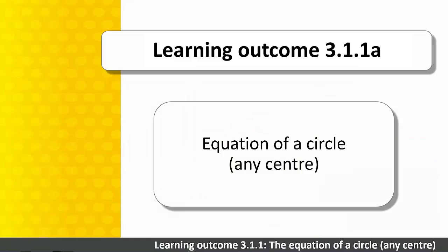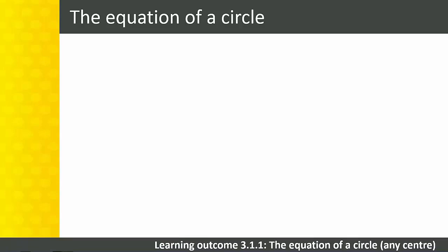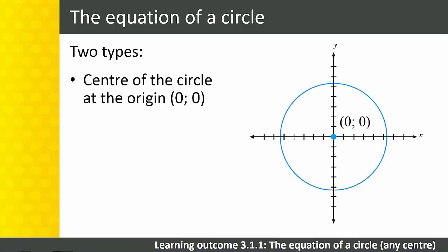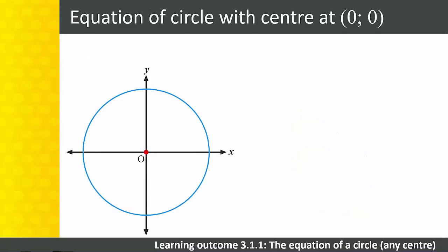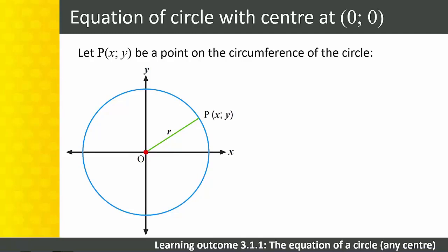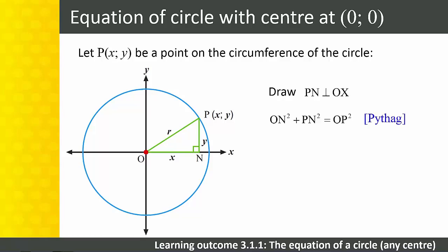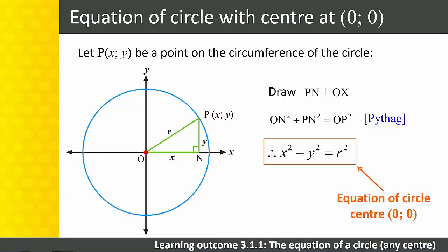Learning Outcome 3.1.1: Derive and apply the equation of a circle with any centre, Part A — the equation of a circle. For this learning outcome, we use coordinate geometry to derive two equations of a circle: one with the centre at the origin, and one with the centre at the point (a, b). Let's start with the simplest case, where a circle has its centre at the origin. Any point on the circle will be at a constant distance from the origin equal to the radius. Let P be a point on the circumference. If we draw PN perpendicular to OX, then by the Theorem of Pythagoras, ON² + PN² = OP². Therefore x² + y² = r², which is the equation of the circle.